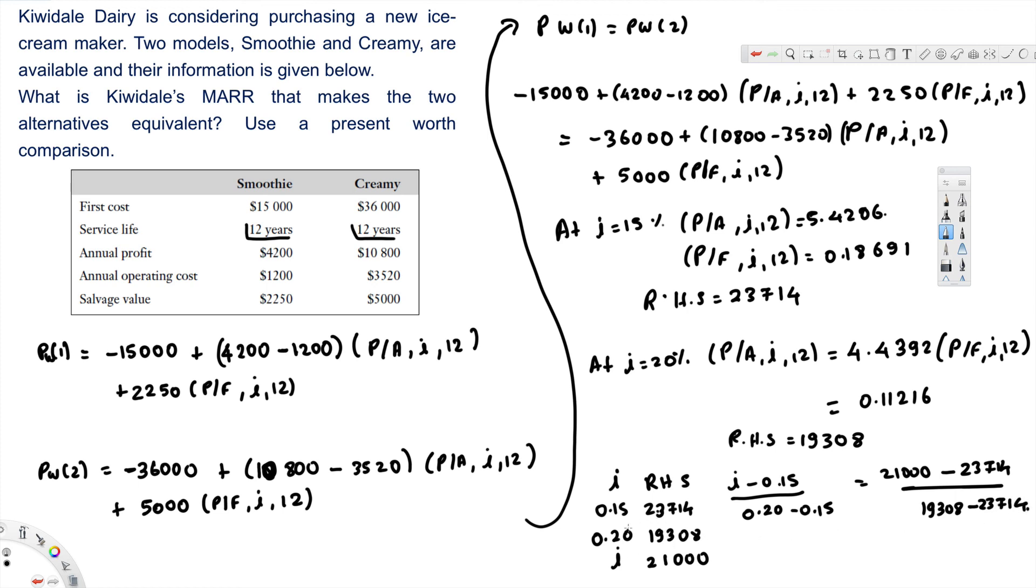We have to do the same thing on both sides. Where i belongs to corresponds to where 21,000 belongs to. 21,000 minus 23,714 in the numerator. In the denominator, we subtract 19,308 minus 23,714.